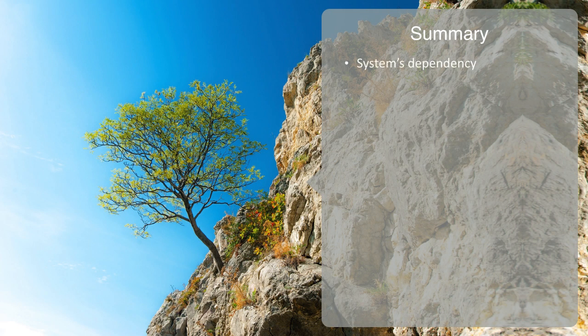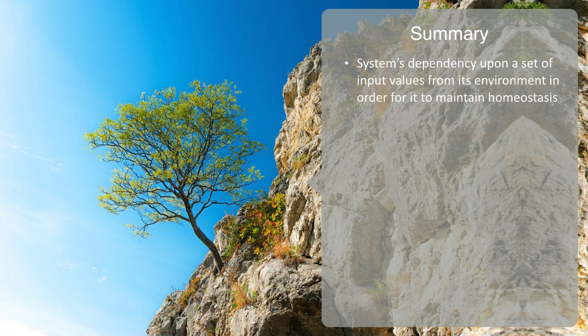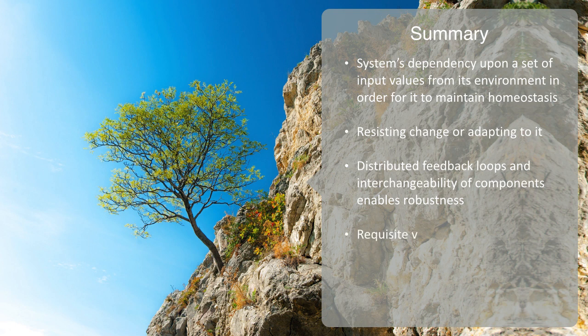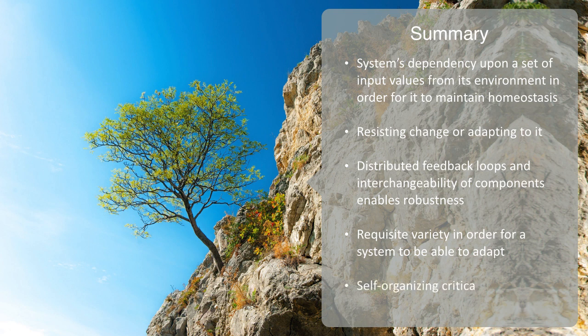In summary, we have been talking about robustness and resilience within self-organizing systems. We defined robustness in terms of a system's dependency upon a set of input values from its environment in order for it to maintain homeostasis. We talked about how a system can maintain its functionality given a perturbation from its environment by either resisting it or adapting to it. We saw how distributed feedback loops and interchangeability of components enables robustness. We also looked at the need for what we called requisite variety in order for a system to be able to adapt. And finally, we talked about self-organizing criticality and noted that, although complex systems are often robust, they are also susceptible to large systemic shocks.